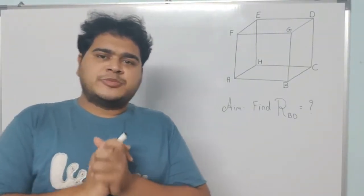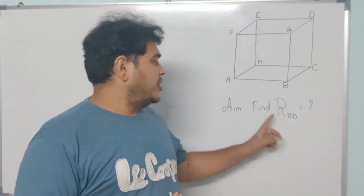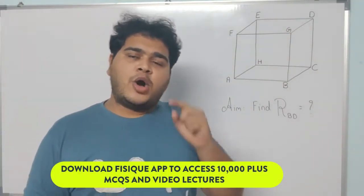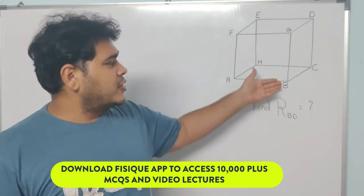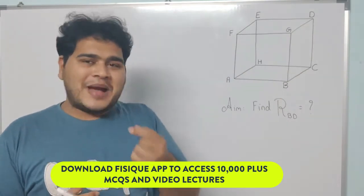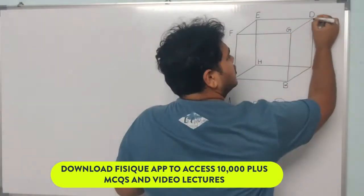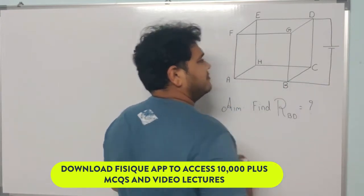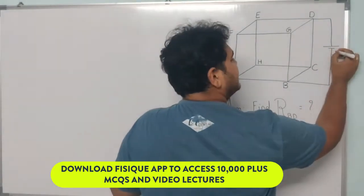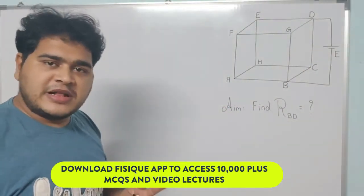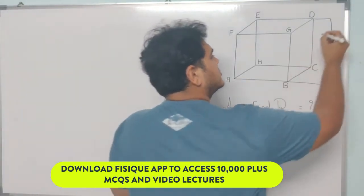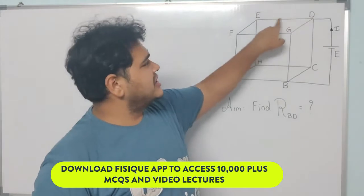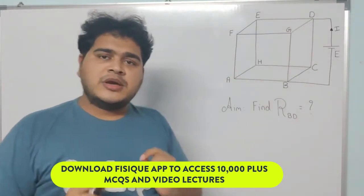We need to find the resistance between point B and D, which is the face diagonal of the cube — two points lying on the face diagonal. To find this, we connect a battery of EMF E to points B and D. The current I starts from point D and splits into three parts.